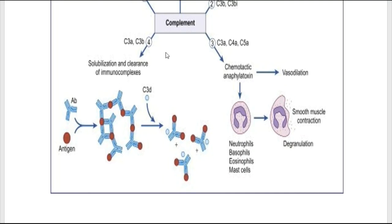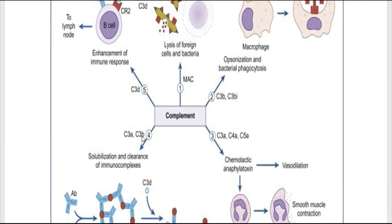For production of antibodies: B cells have receptors for C3b, and when C3b binds to the B cell it secretes more antibodies. Thus C3b is also an antibody-producing amplifier, converting into an effective defense mechanism to destroy invading microorganisms.